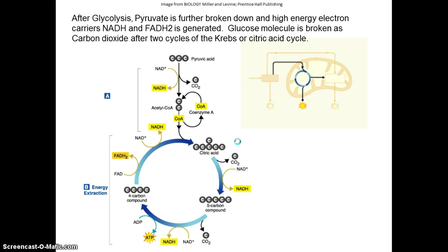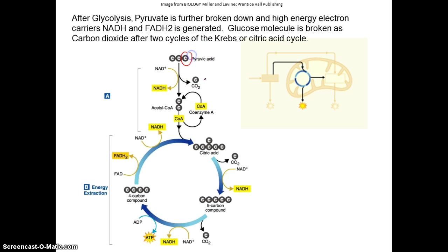That pyruvate, after forming from glycolysis in the cytoplasm, goes into the mitochondria where it's further broken down. All the electrons from those bonds being broken are picked up by NADH and another electron carrier called FADH. This three-carbon molecule goes into the mitochondria, one carbon is lost as CO2 — that's what you're exhaling — and some electrons are picked up by NADH.